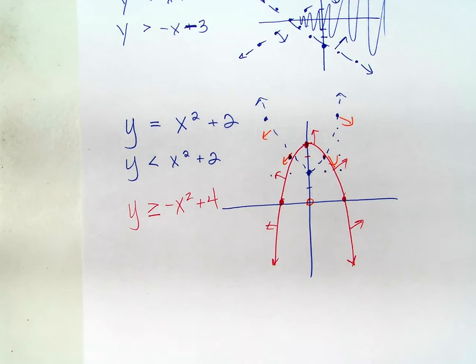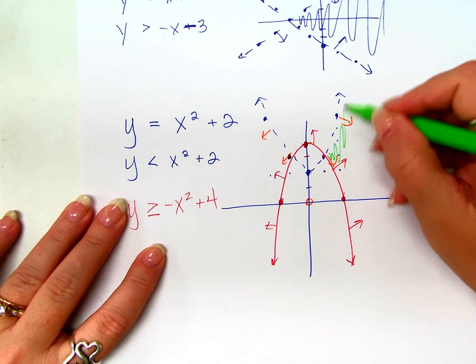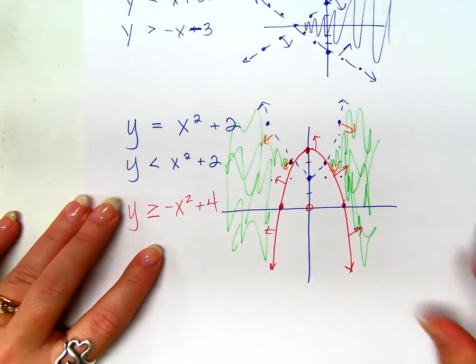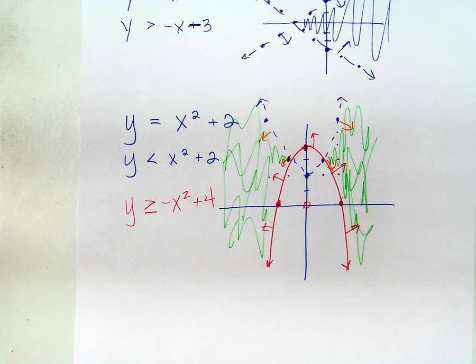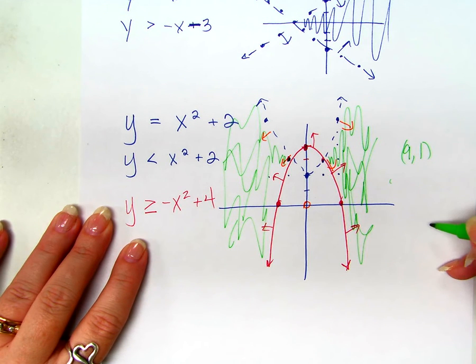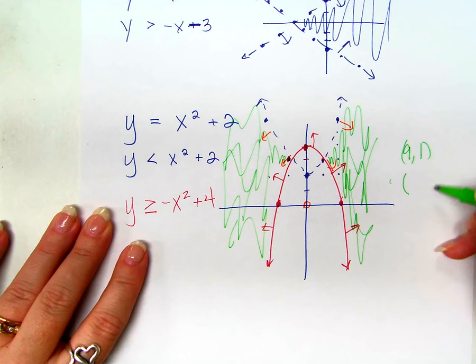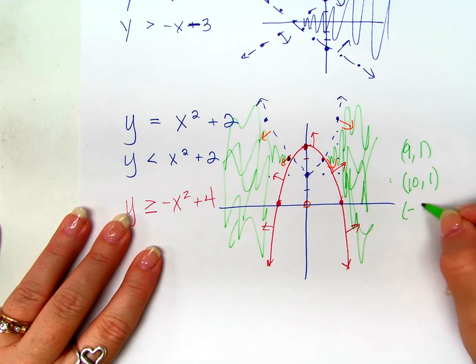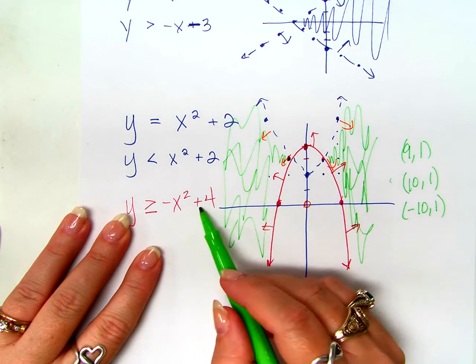Like that. Well, where are they both true? On both sides of the parabola. So, like here and here. So, what if I said to you, choose a point that is a solution? It would be something in the green. 9, 1 would be a solution because that's way over here, up here somewhere. What's another point that's in the solution? 10, 1. What about over here? Negative 10, 1. It works though, doesn't it? Yeah.